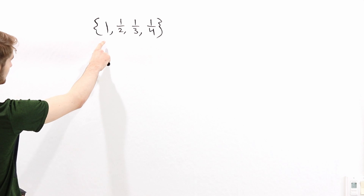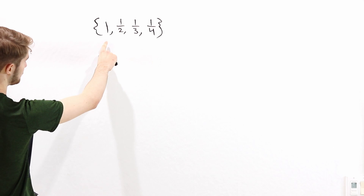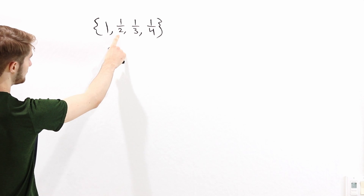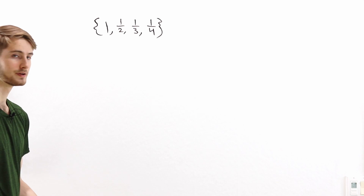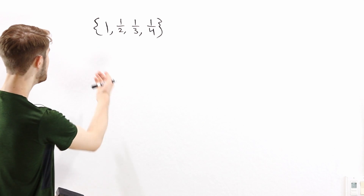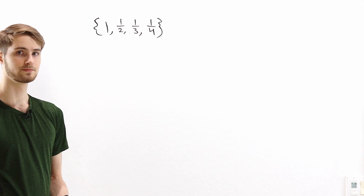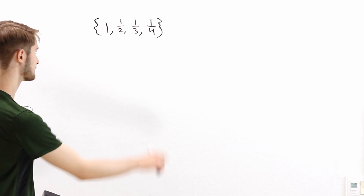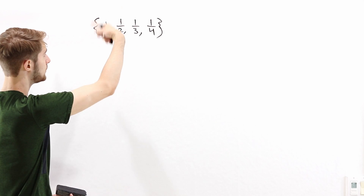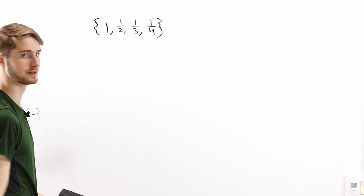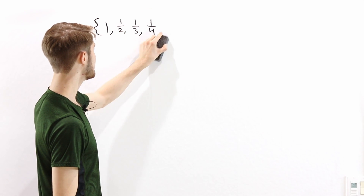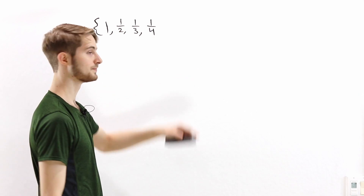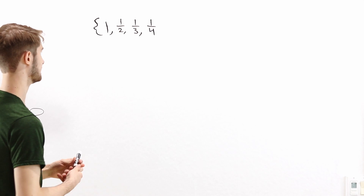Let's say we have this set consisting of the elements 1, 1/2, 1/3, and 1/4. What is the minimum element in this set? Well, obviously 1/4 — that's going to be the smallest number in this set. And any time we have a finite set, there will always be a smallest element.